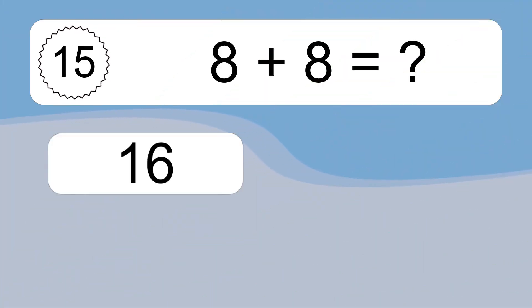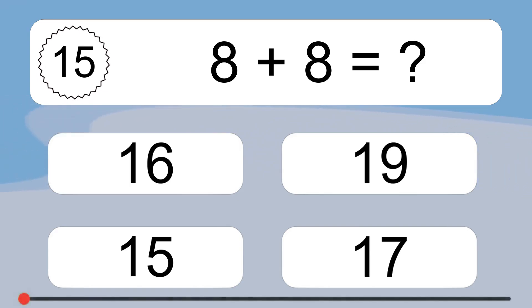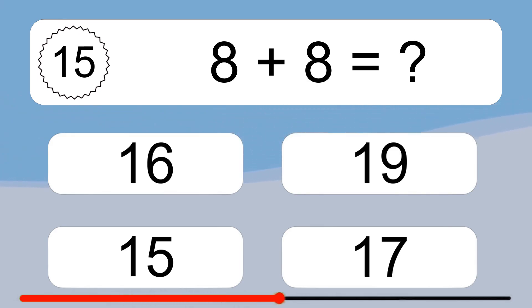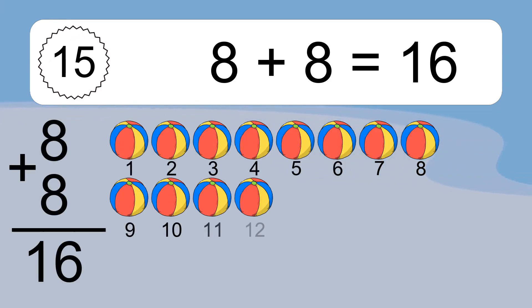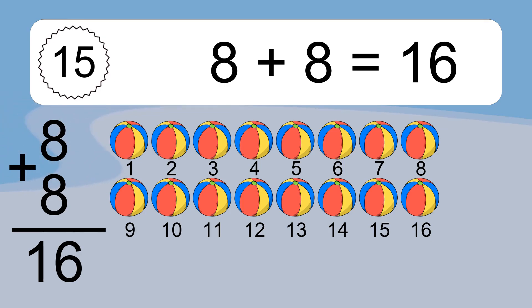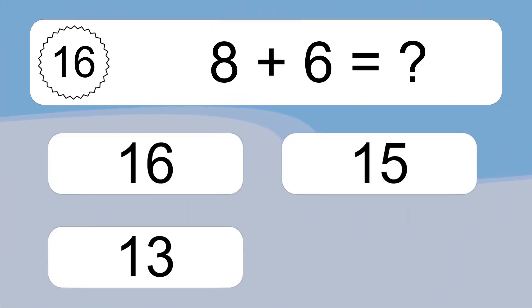8 plus 8 equals what? 8 plus 8 equals 16. Let's count it: 1, 2, 3, 4, 5, 6, 7, 8, 9, 10, 11, 12, 13, 14, 15, 16.